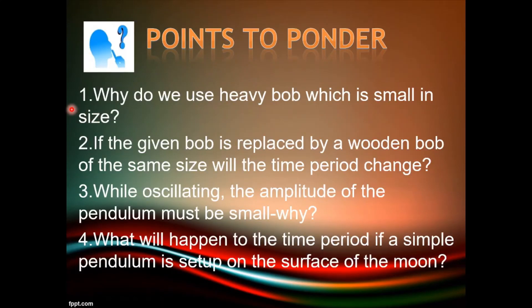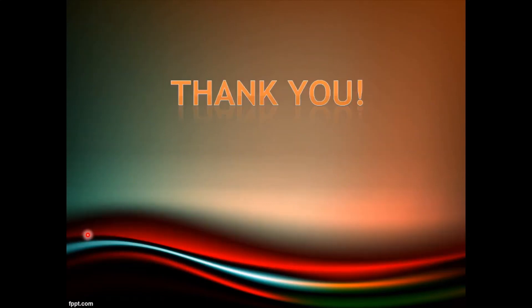Points to ponder: 1. Why do we use a heavy bob which is small in size? 2. If the given bob is replaced by a wooden bob of same size, will the time period change? 3. While oscillating, the amplitude of the pendulum must be small — why? 4. What will happen to the time period if a simple pendulum is set up on the surface of the moon? Thank you.